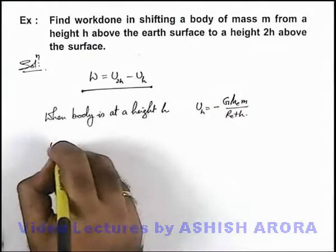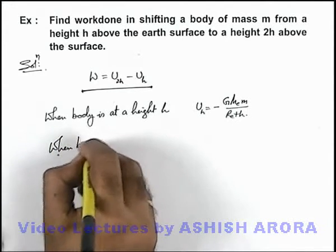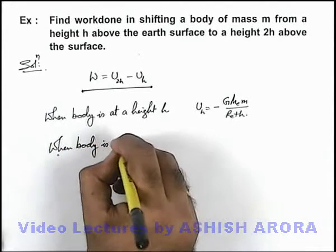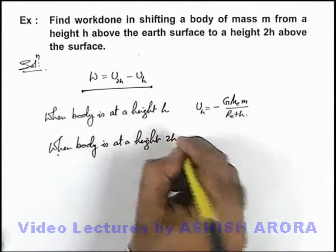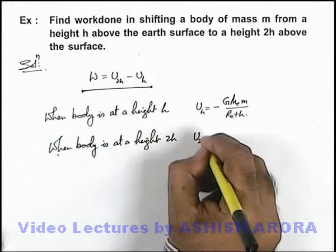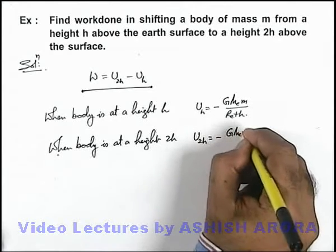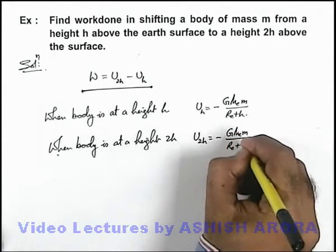Similarly when body is at a height 2h we can use U_2h will be minus GMm over R_e plus 2h.